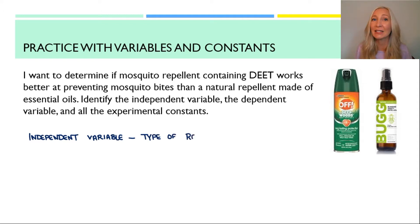So how would we test that? Our independent variable would be the type of mosquito repellent. This is what we are testing. This is the thing that we are changing in the experiment. We are manipulating it because we want to know more information about the types of mosquito repellents. The dependent variable is going to be the number of mosquito bites that we get.